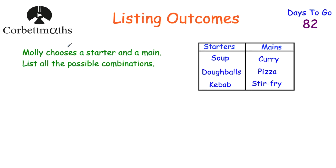Here we've got a question that says Molly chooses a starter and a main, and we've been asked to list all possible combinations. There are three possible starters — soup, doables, or kebab — and for mains we've got curry, pizza, and stir fry. Feel free to pause the video now to try this question yourself.